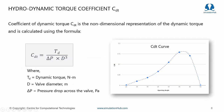Here I am introducing the coefficient of hydrodynamic torque, popularly known as CDT. This is the non-dimensional representation of the dynamic torque, calculated using a formula that includes the dynamic torque itself, the valve diameter, and the pressure drop across the valve. When CDT is calculated for each angle of opening and plotted across the full valve operation range, it gives a typical CDT curve for a butterfly valve.